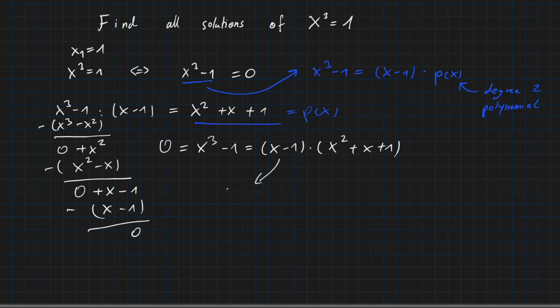So if x minus 1 equals 0, but here we already found x₁ equals 1. So we are remaining with the situation where x squared plus x plus 1 equals 0.